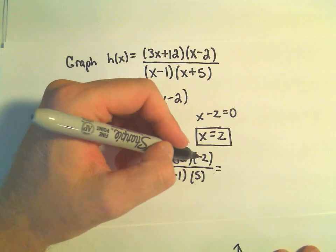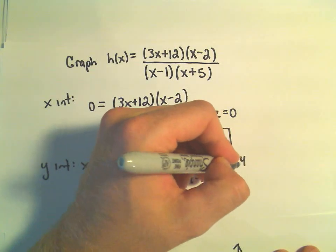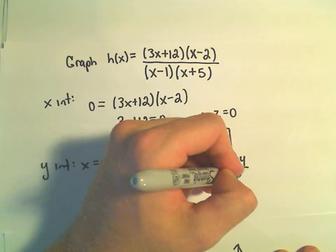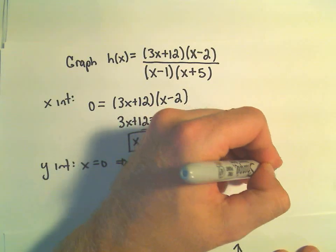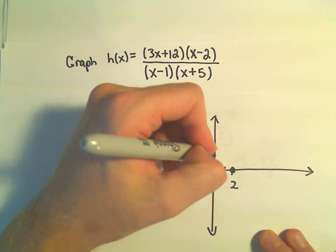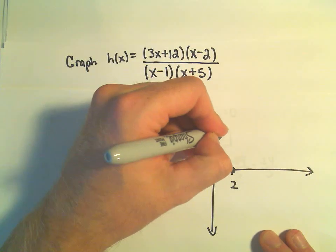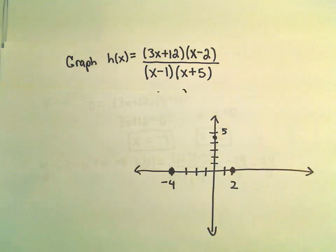It looks like on top we have negative 24 over negative 5. Well, that's 24 over 5, which is pretty close to 5. So 1, 2, 3, 4, 5. We'll stick it just a little bit further down there. And now I've got my y-intercept.